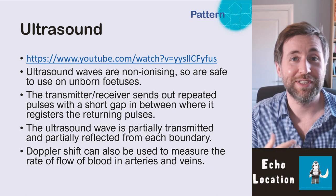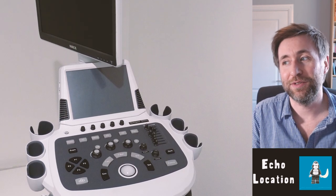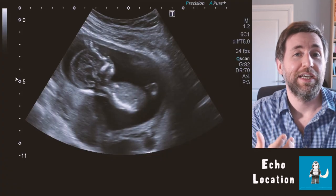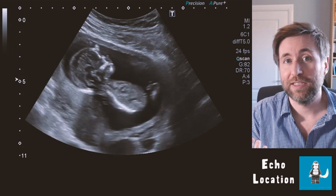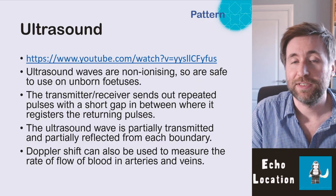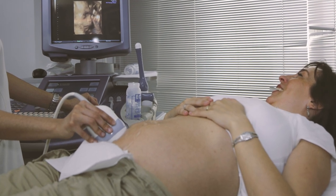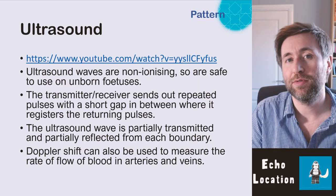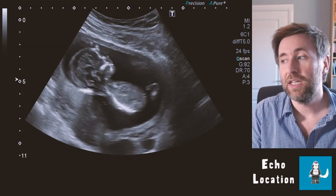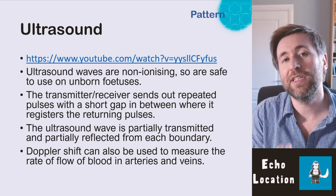Ultrasound scans give us many benefits. The main one is that we can scan unborn fetuses — ultrasound is non-ionizing, so it's safe to use on them. We can't use X-rays because ionizing radiation could cause DNA mutation and lead to cancer. There's a transmitter which is also a receiver, and it sends out repeated pulses — an important difference from other echolocation devices — with short gaps between pulses to allow time for the reflected pulse to return.